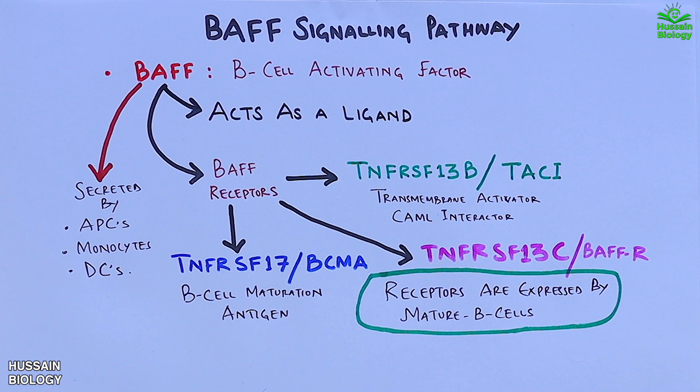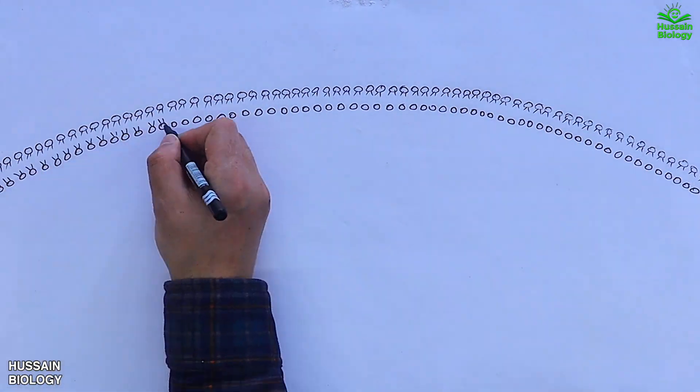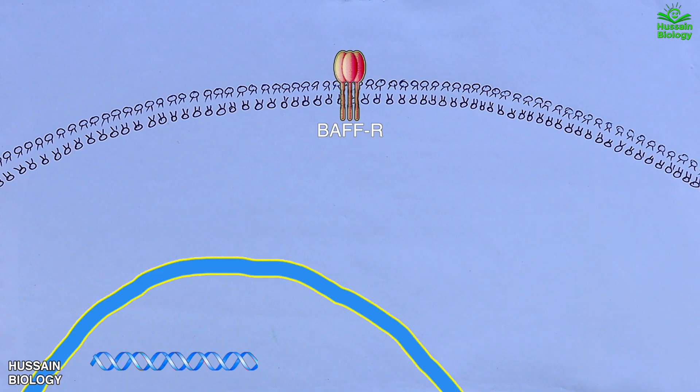Now let's get directly to the pathway. In the diagram we have a B cell plasma membrane that expresses BAFF receptor or TACI. Within the cell we have a nucleus which has DNA in it.